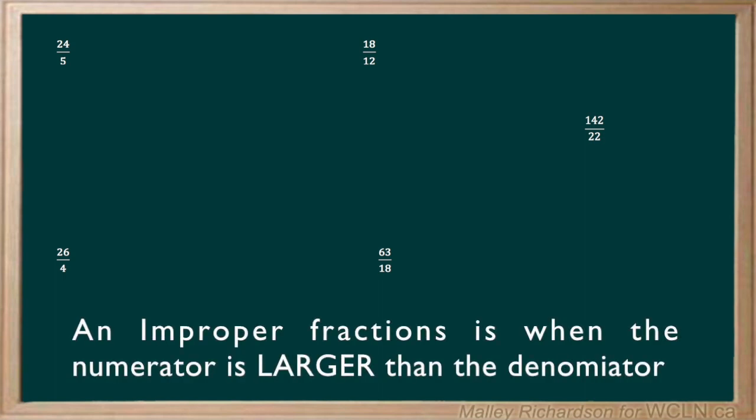The following set of questions are asking us to convert these improper fractions into their mixed numbers. We know that all of these are improper fractions because the numerator in each question is smaller than the denominator.